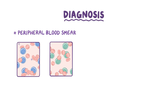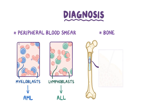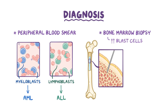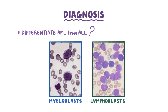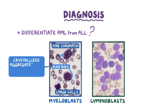The diagnosis of AML and ALL usually starts with a peripheral blood smear, which shows a lot of blast cells — myeloblasts in the case of AML, and lymphoblasts in the case of ALL. This is usually followed up by a bone marrow biopsy, which also shows an increase in blast cells. In acute leukemia, the percentage of blast cells in the bone marrow goes up from their normal value of 1–2% to greater than 20%. An important step in diagnosis is to differentiate AML from ALL, which can be done by identifying blast cells as either myeloblasts or lymphoblasts in a specially stained smear. Myeloblasts are usually large cells with nuclei containing fine chromatin and prominent nucleoli. A classic feature of myeloblasts in AML, especially acute promyelocytic leukemia, is the presence of Auer rods in the cytoplasm, which are crystallized aggregates of the myeloperoxidase enzyme.